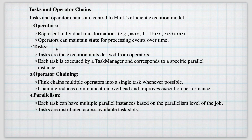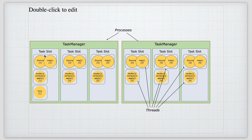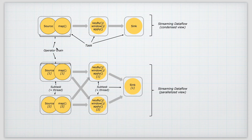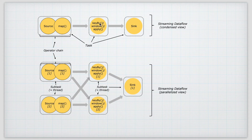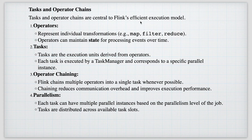Inside a task slot we have tasks and operator chains. In a Flink job, we first read from a source, then apply a map, then a filter — each individual operation is called a task. For example, the key-by and window operation is one task, the sink is one task, and source plus map can be combined into a single task — that combination is called an operator chain. Similarly, if you combine map and filter into a single task, they form an operator chain. Operator chains allow multiple operators to execute together as one task.